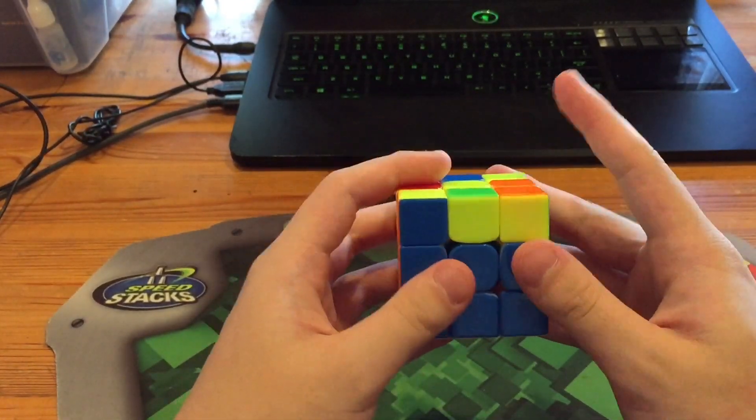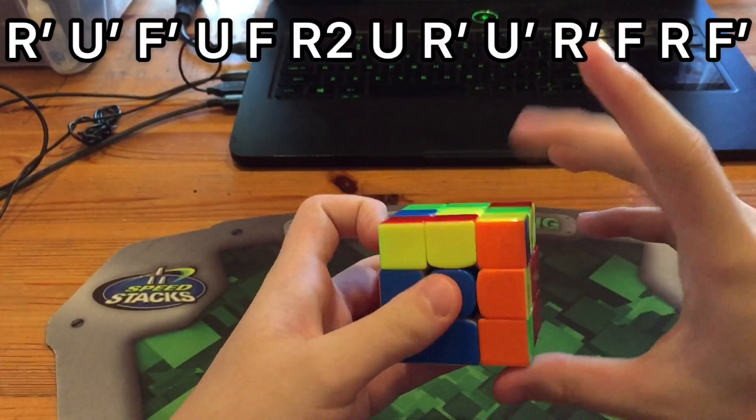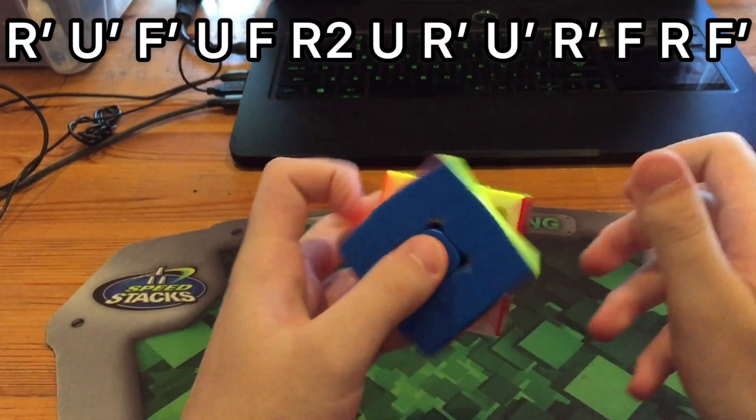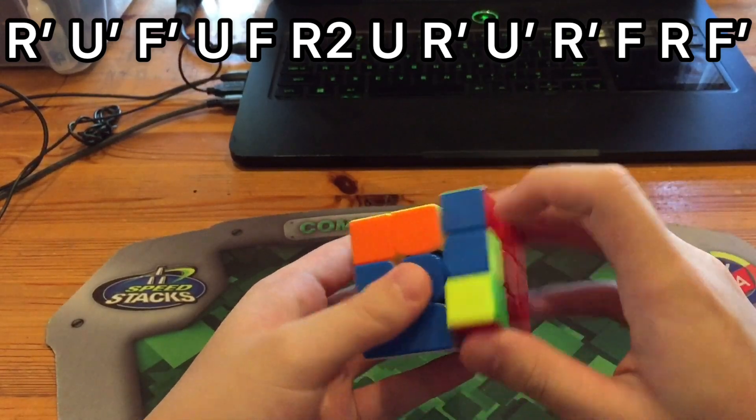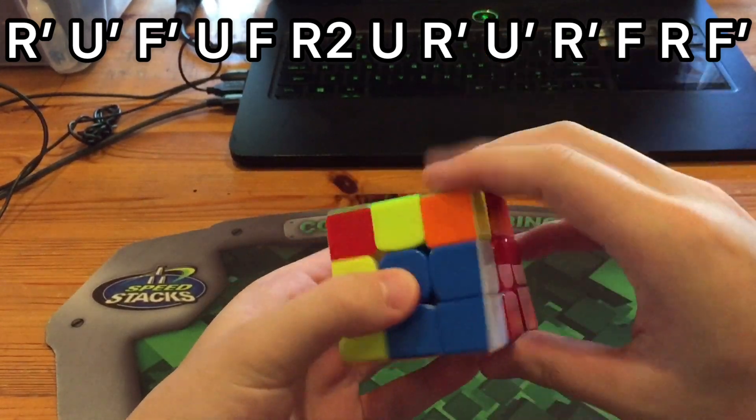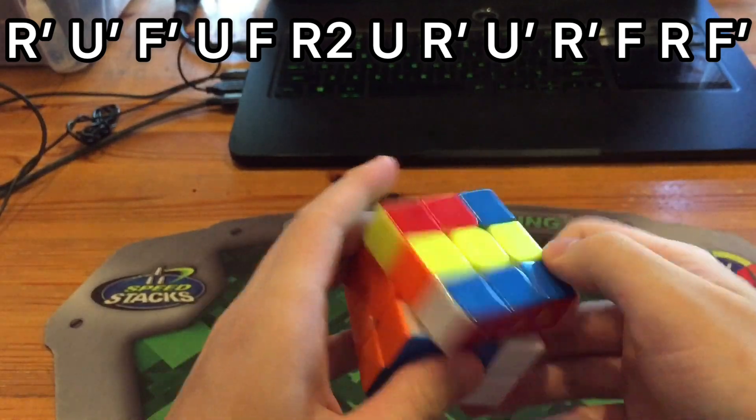there's actually a better RUF algorithm, and it goes like this. It's not better than the S-Lice algorithm, but it is better than the standard RUF, which is why I'm showing it. So it's a decent alternative algorithm.